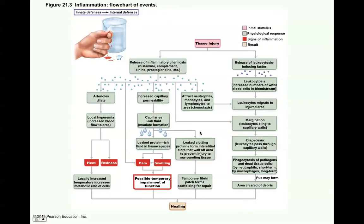This fibrin mesh will provide a scaffold for repair and also isolate the area. This complex figure shows all the steps of inflammation. This person picked up a beaker and cut themselves — that's tissue injury. You get the release of inflammatory chemicals such as complement, kinins, prostaglandins, and histamine. Histamine actually is a chemical that causes further dilation of the blood vessels and leakiness of the capillaries.